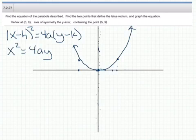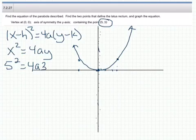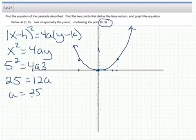In order to do that, we're going to use the idea that it contains the point x is 5 and y is 3. So plugging in x is 5 and y is 3, we get 5 squared equals 4 times a times 3, or in other words, 25 equals 12a. So a must be equal to 25 divided by 12.